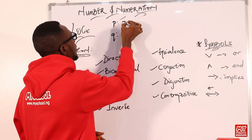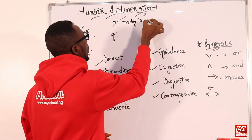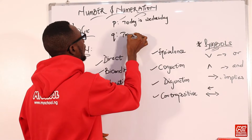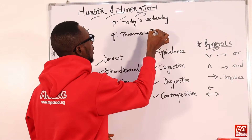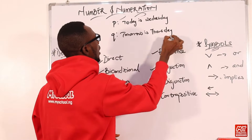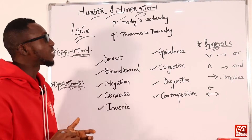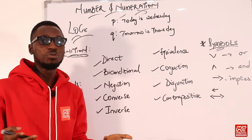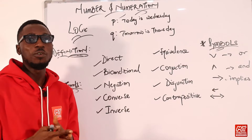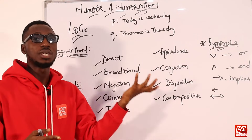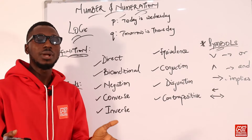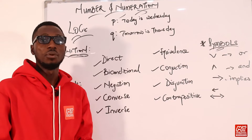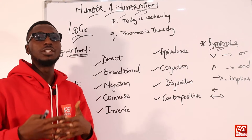Let me say statement P is: today is Wednesday. And statement Q is: tomorrow is Thursday. If you look at these statements, you can say each one is true or false. That tells you that for a statement or proposition under the logical context, you can assign a true or false value to it — we call this the truth value.